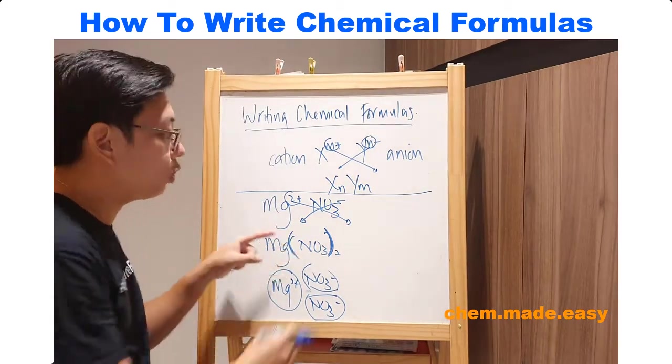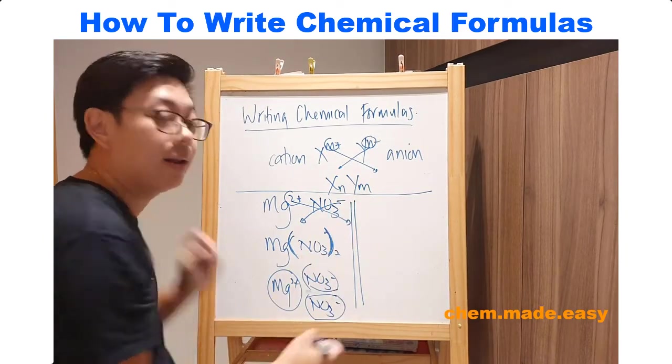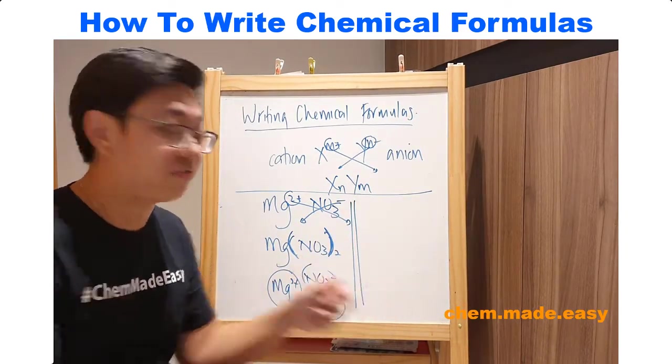So for a polyatomic ion, you want to make sure you have the brackets. I'm just going to show you one more. Let's assume you have ammonium sulfate.